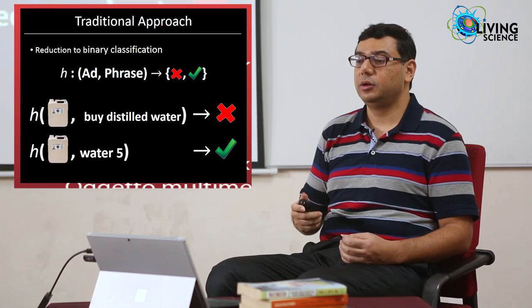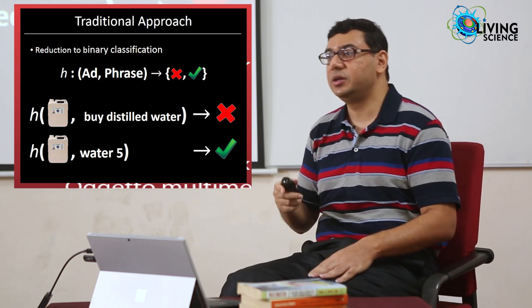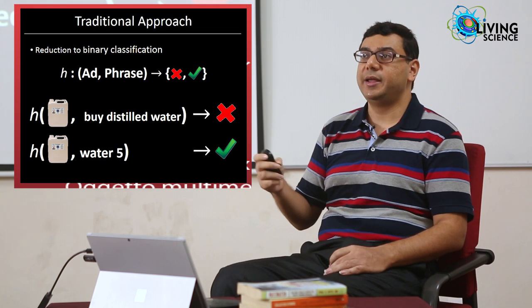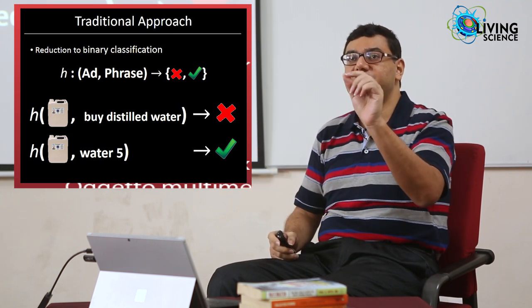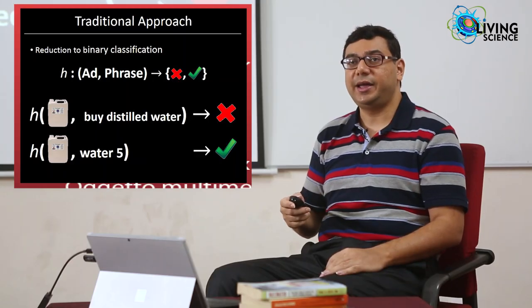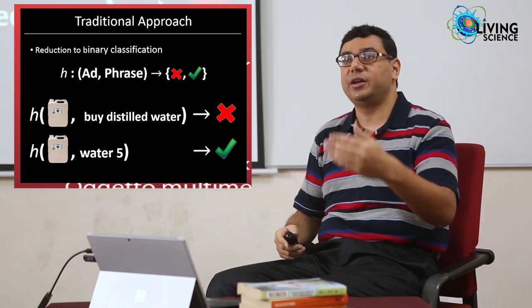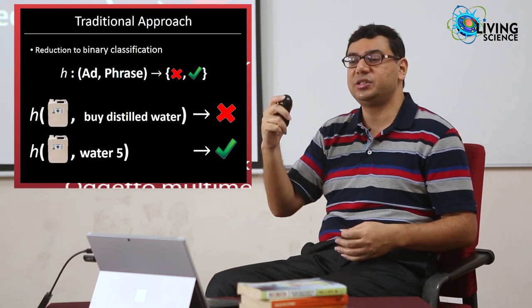The reason traditional approaches don't work well is that they reduce the problem's complexity by making it a simple binary classification task — a binary classifier h that scans every phrase on the ad to predict whether that phrase would make a good query. Ads are pithy and have very little text, so the binary classifier can never predict 'buy distilled water' simply because it doesn't occur as a phrase on the ad. Furthermore, the binary classifier is low-capacity yet expected to model millions of queries and millions of ads, so it fails often.